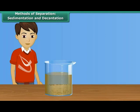Jack filled a beaker with muddy water and left it undisturbed for some time. After some time, he was surprised to see the beaker. The beaker had clear water. Mud being heavy, had settled down at the bottom of the beaker while the water formed the upper layer.